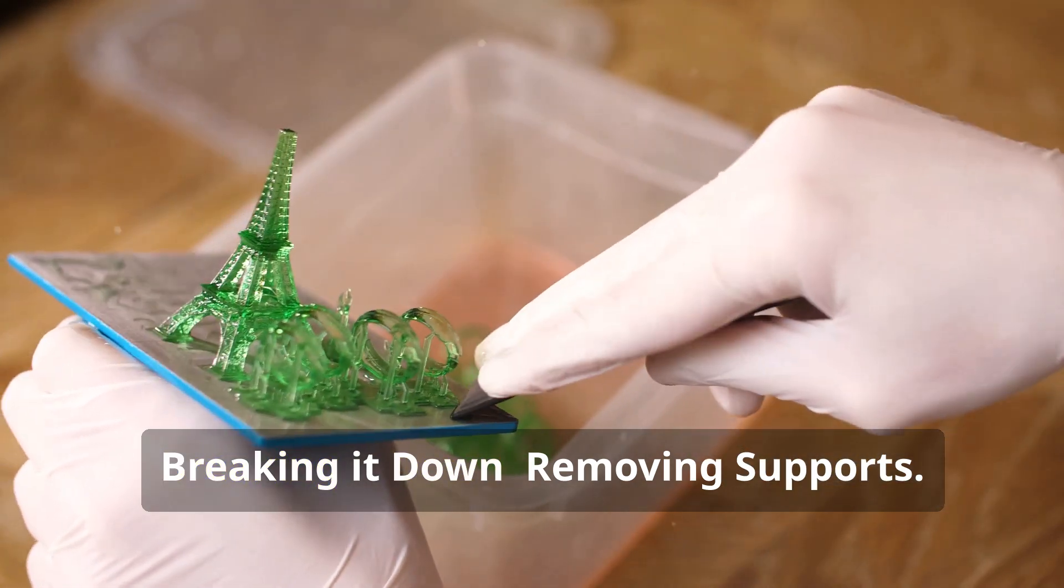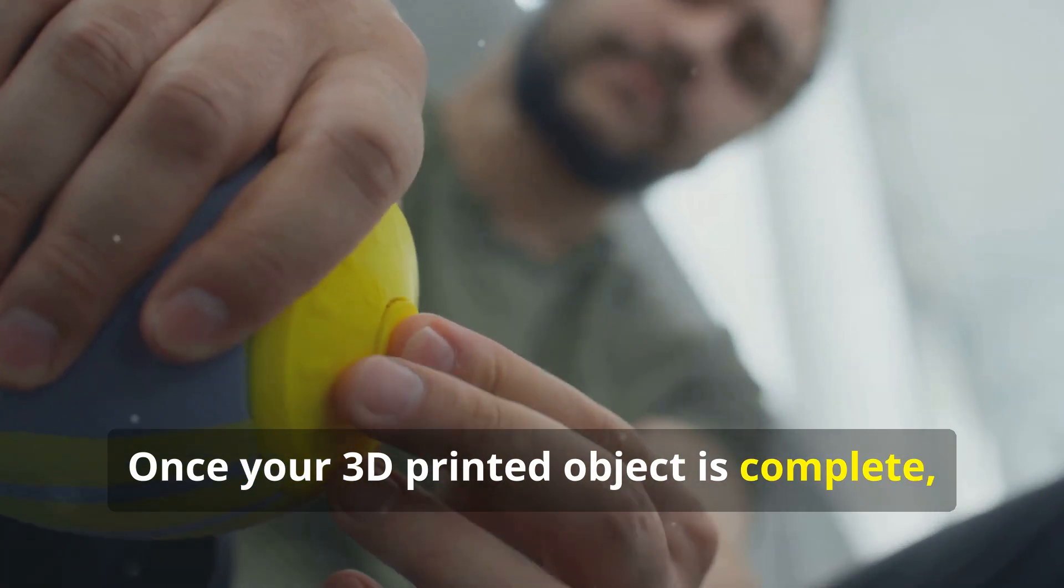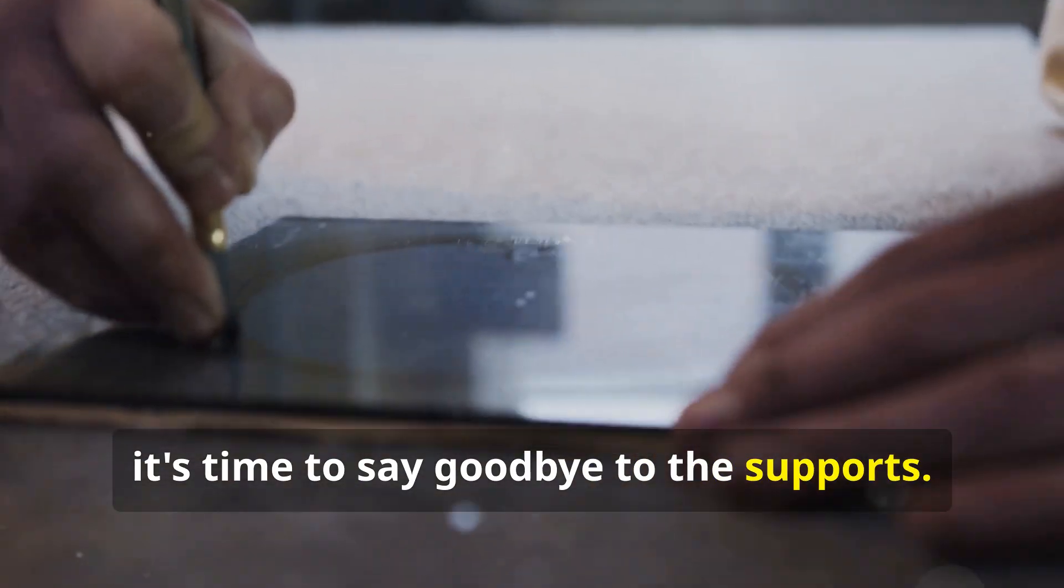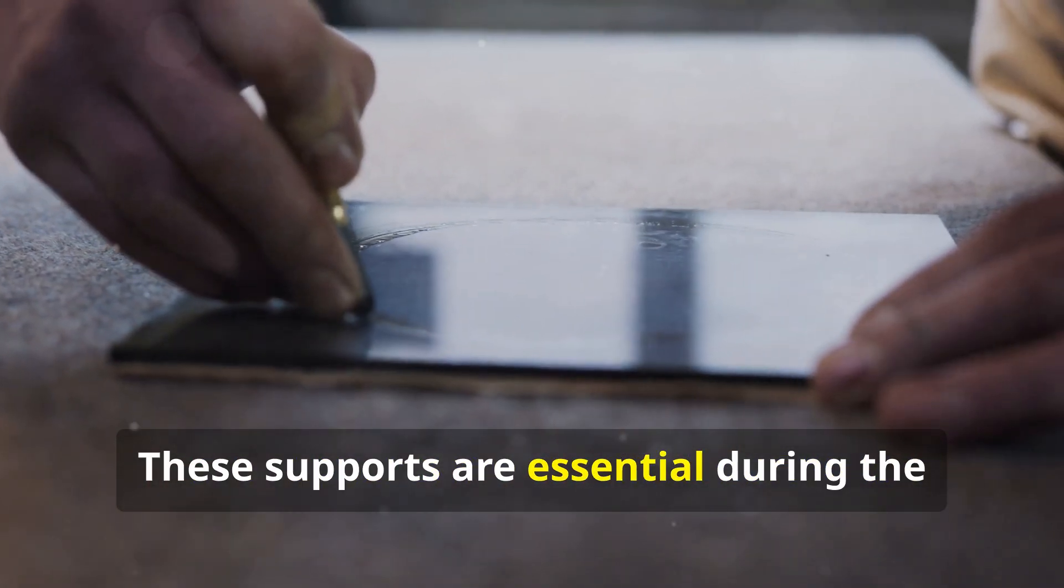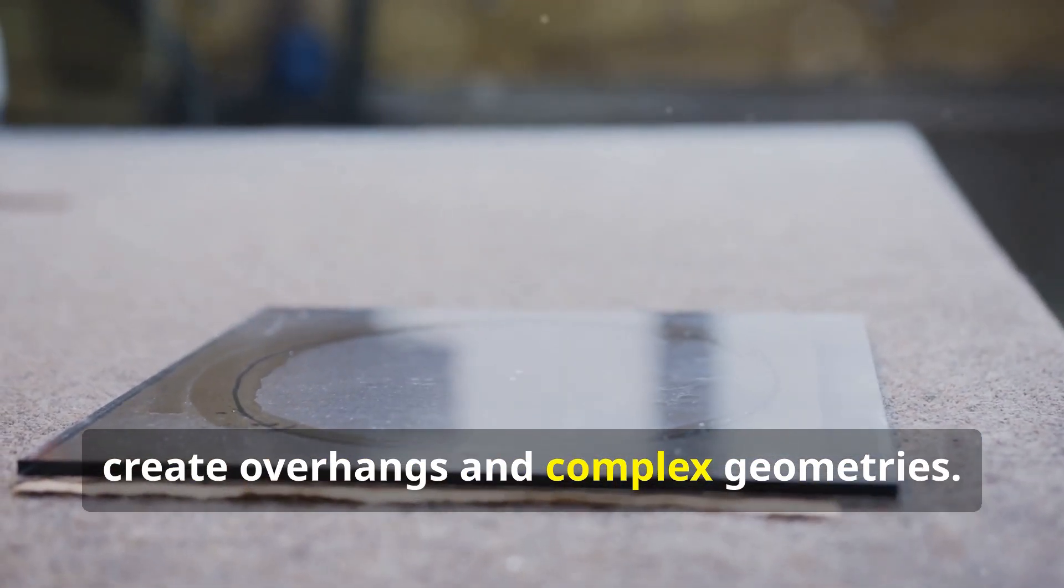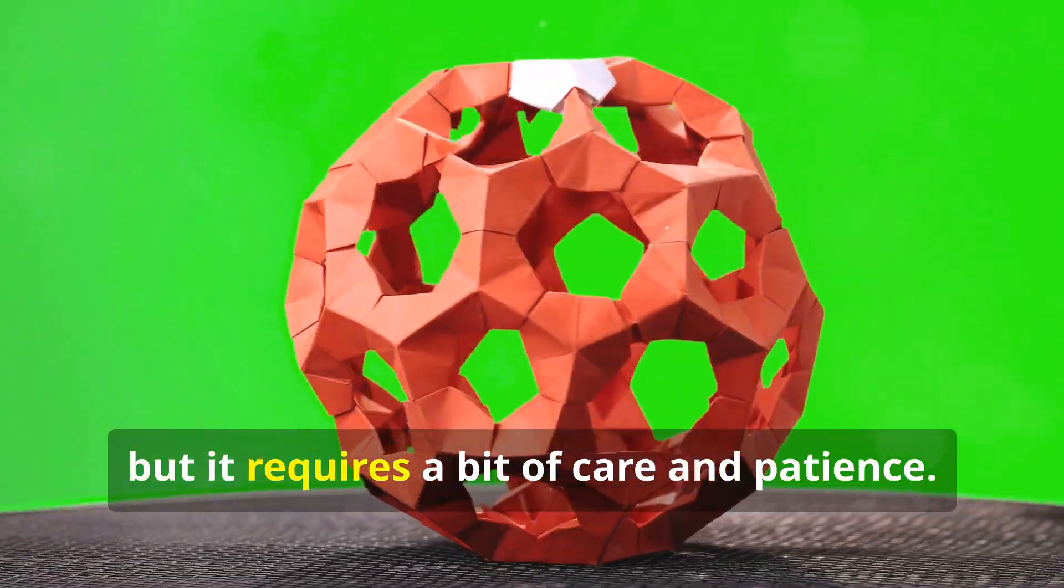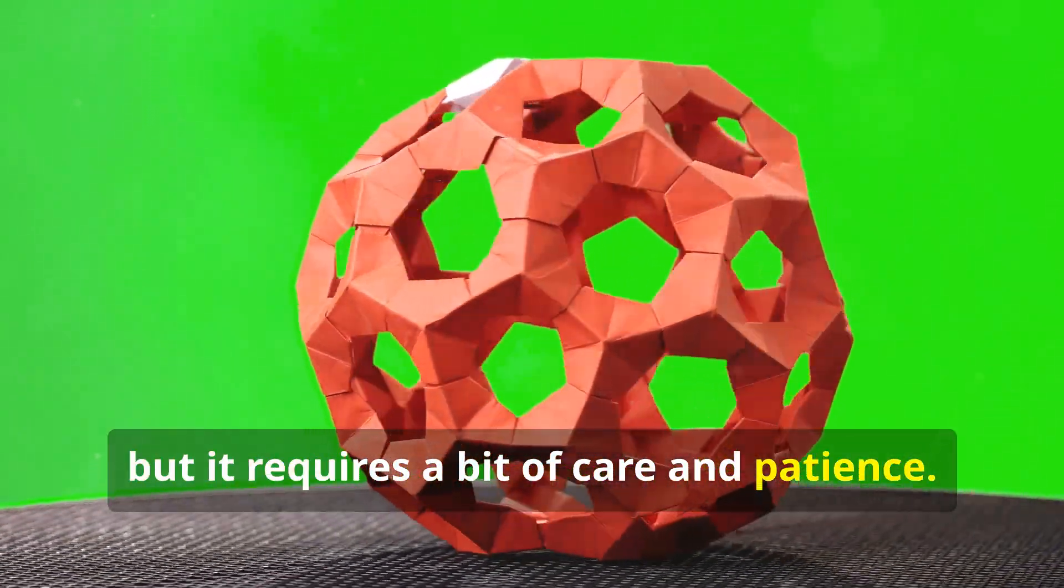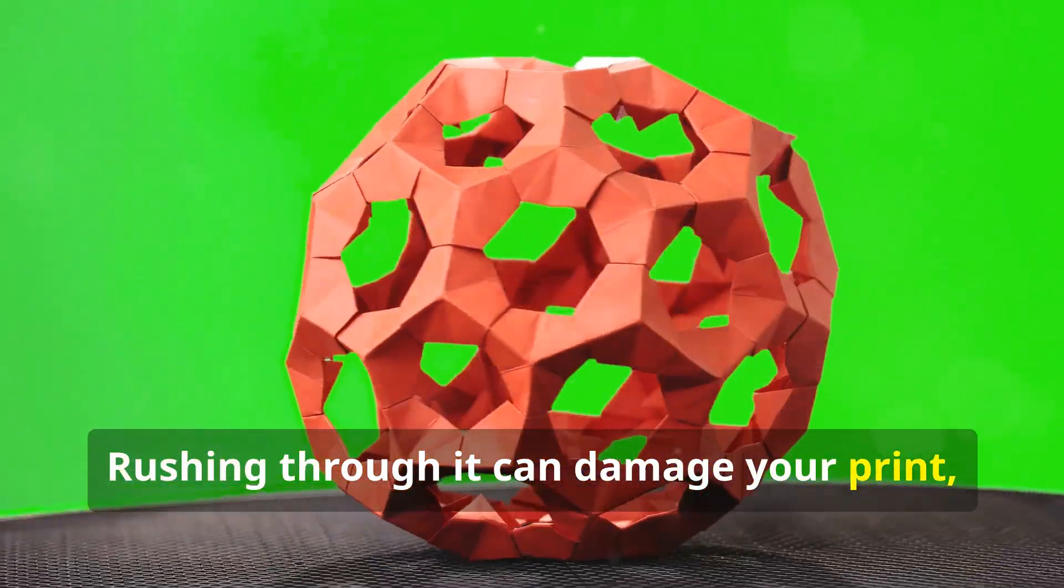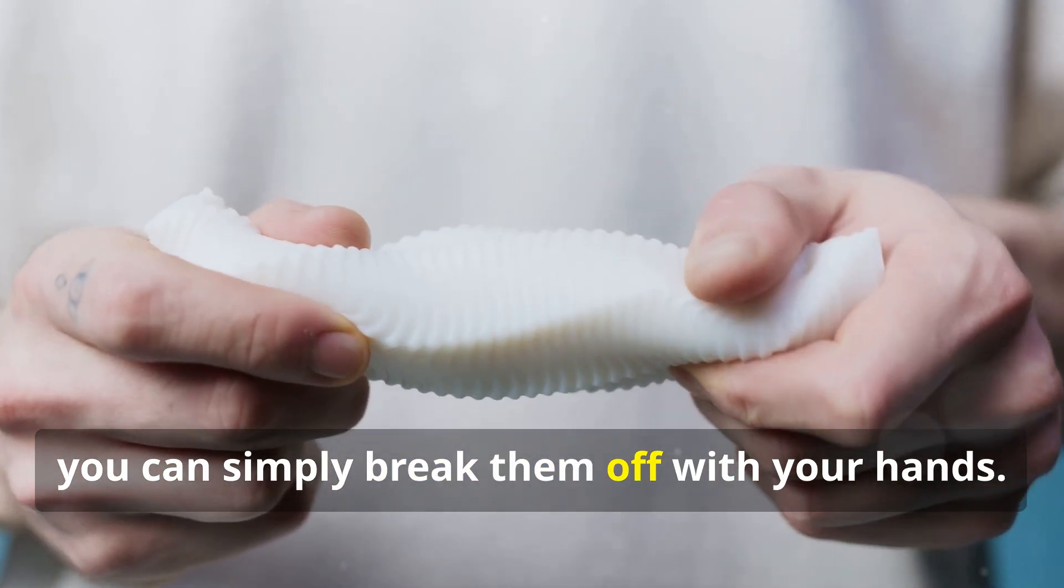Removing supports: once your 3D printed object is complete, it's time to say goodbye to the supports. These supports are essential during the printing process, providing the necessary structure to create overhangs and complex geometries. This is usually a simple process, but it requires a bit of care and patience. Rushing through it can damage your print, so take your time.